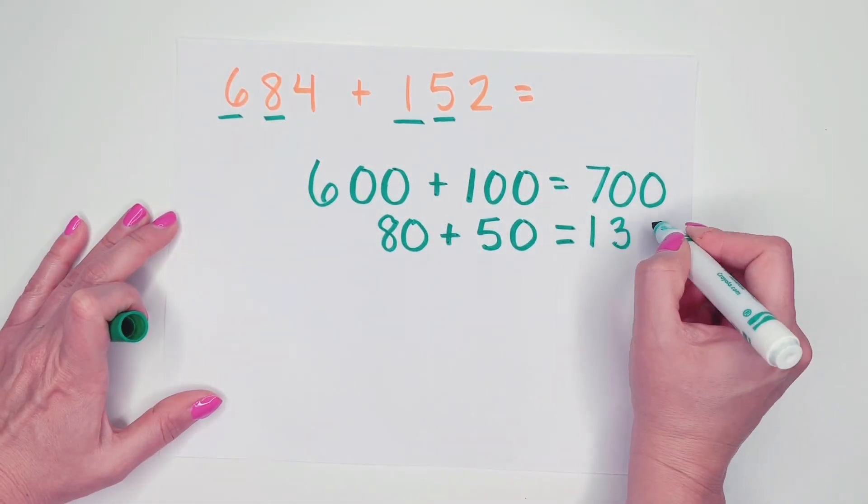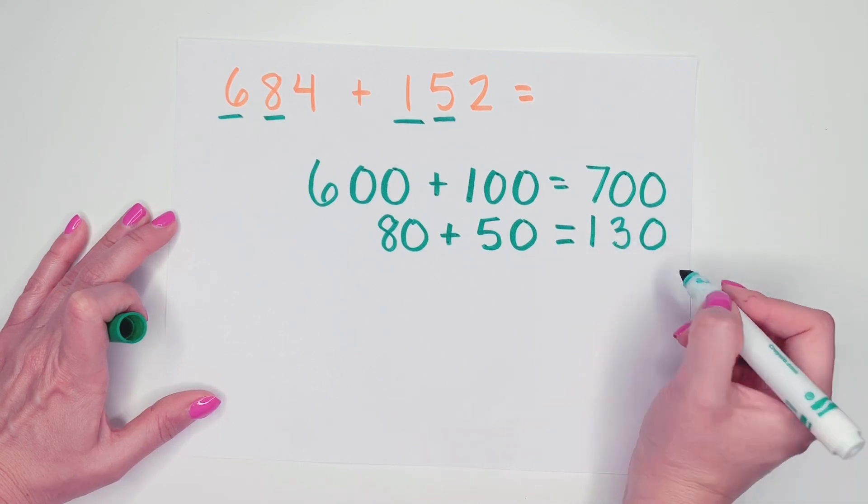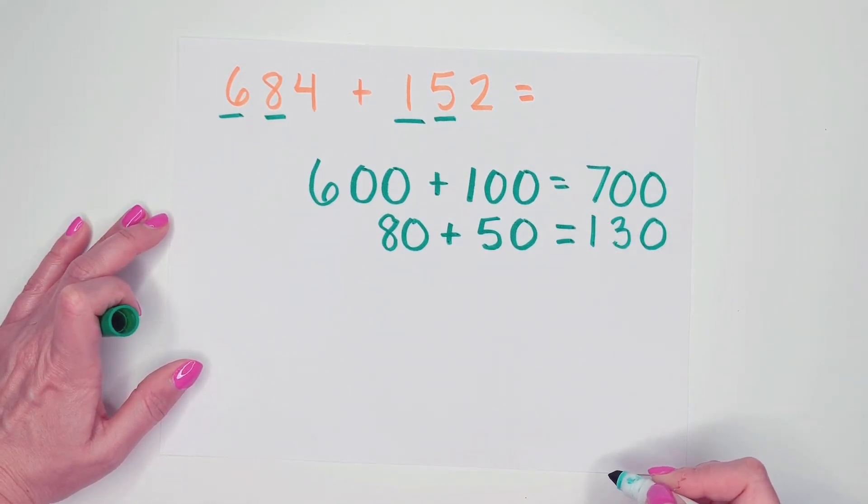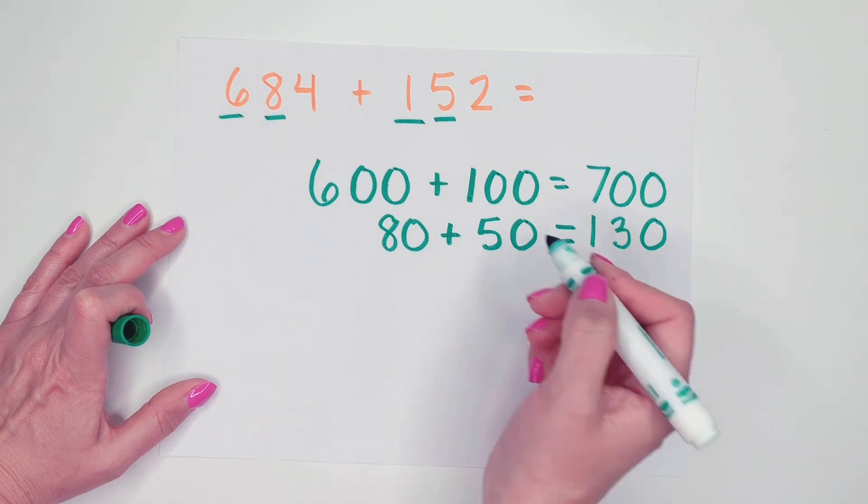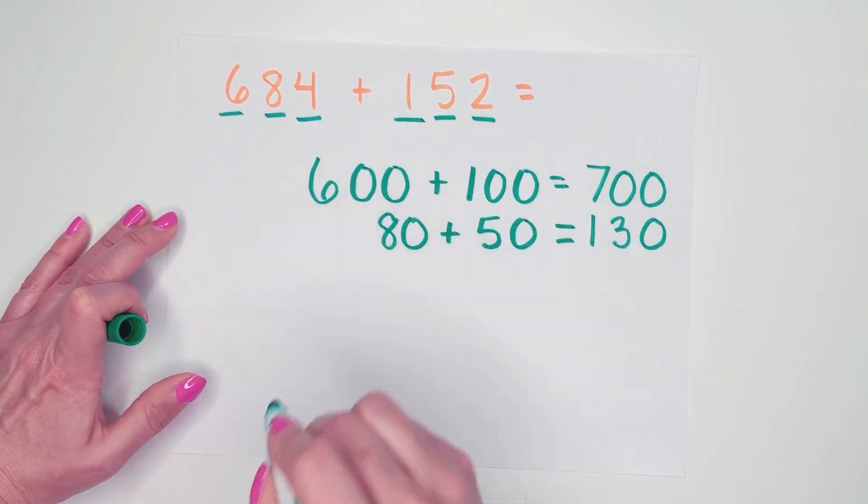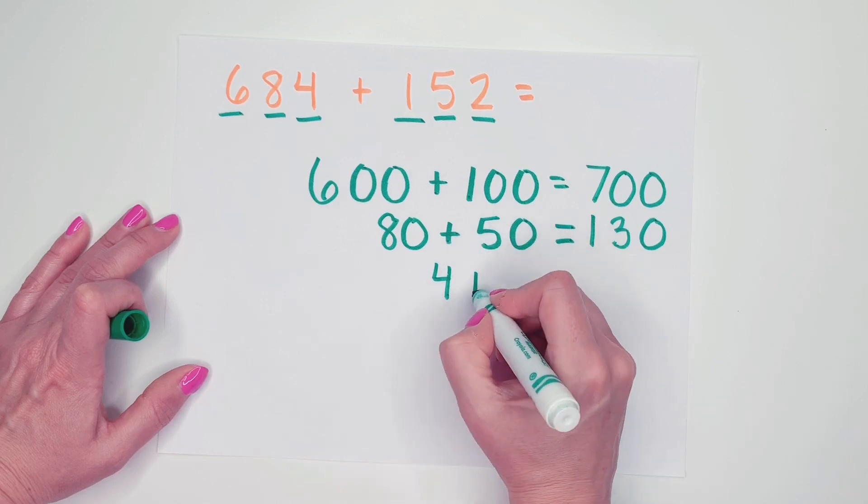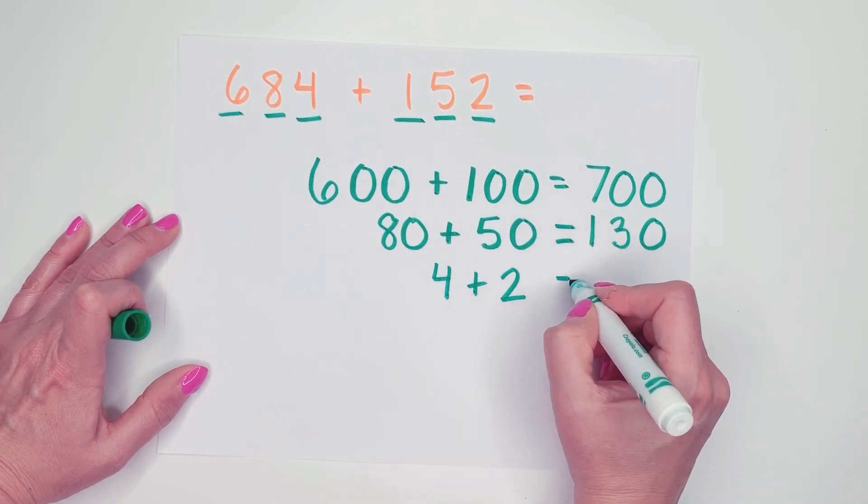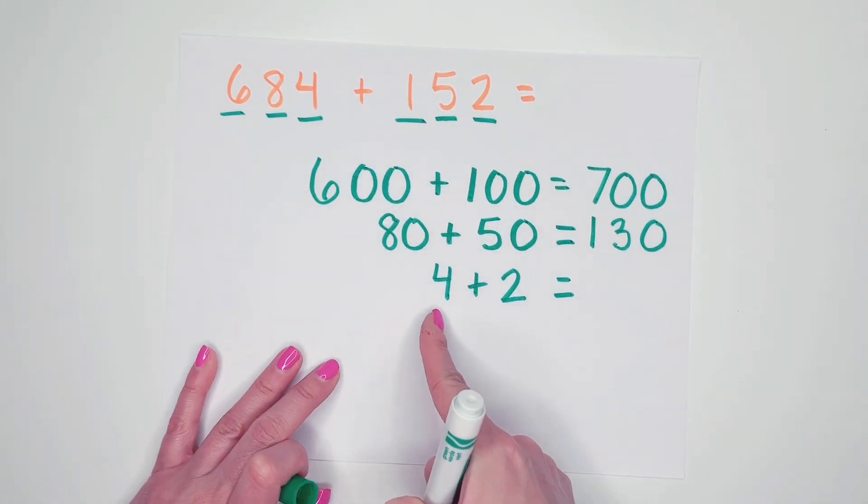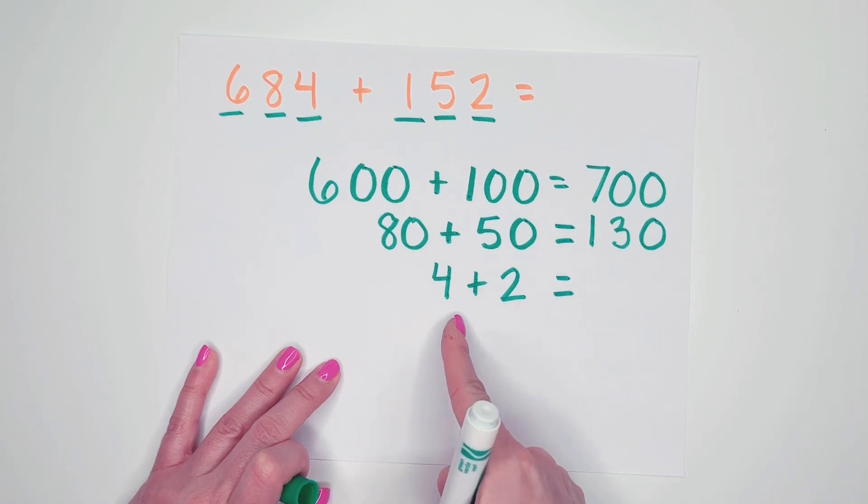I'm carefully lining up my hundreds, tens, and ones. So when I add them together, it will be much easier for me. Now let's look at our ones. We have a 4 and we have a 2. I'm lining up my equal sign. Well, 4 plus 2, I know that. 4 plus 2 is 6.